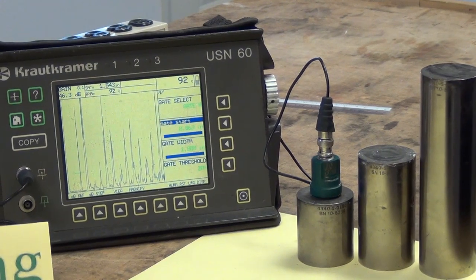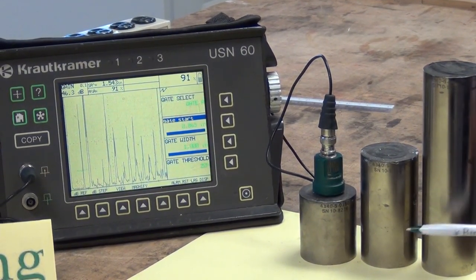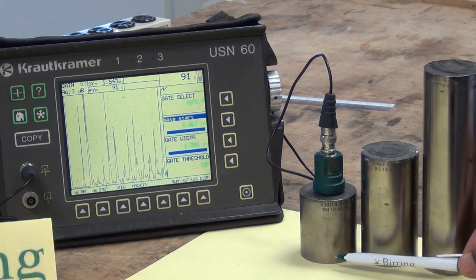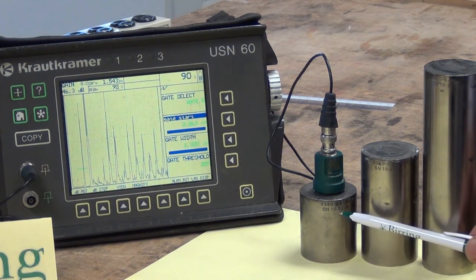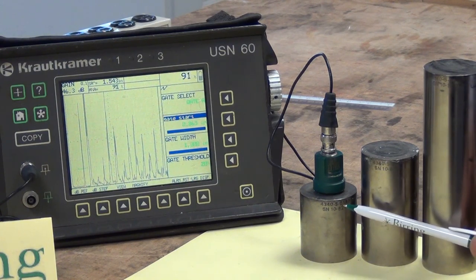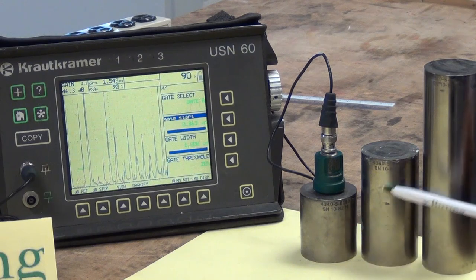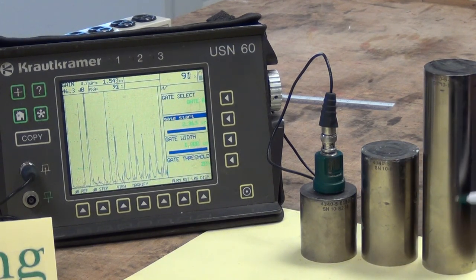We start with the process of creating a DAC curve. I have three blocks here with flat bottom holes at the bottom. The size of the flat bottom holes is 5/64th of an inch. The metal path is 1.5 inches to the first one, 3 inches to the second one, and 6 inches to the third one.